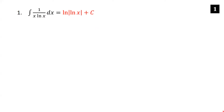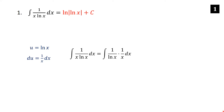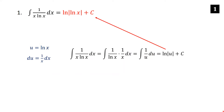Now if that was too quick, let's formally do the substitution. We're letting u equal ln x so that du is 1 over x dx. We can rewrite this integral 1 over x ln x dx as 1 over ln x times 1 over x dx. You can see that u is right here and du is right here. So this becomes the integral of 1 over u du, which is ln absolute u plus c. Substituting ln x back in for u, we get ln of absolute ln x plus c.